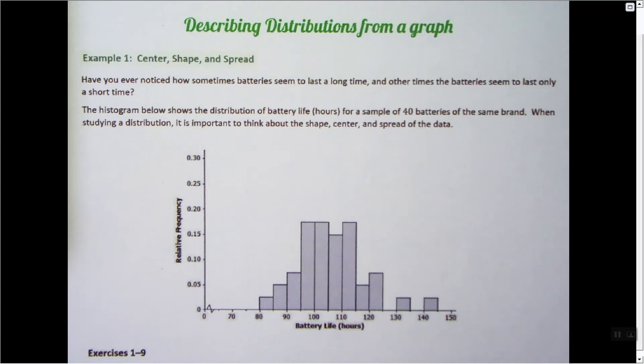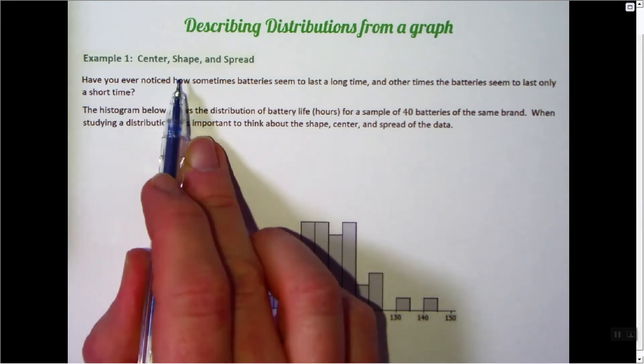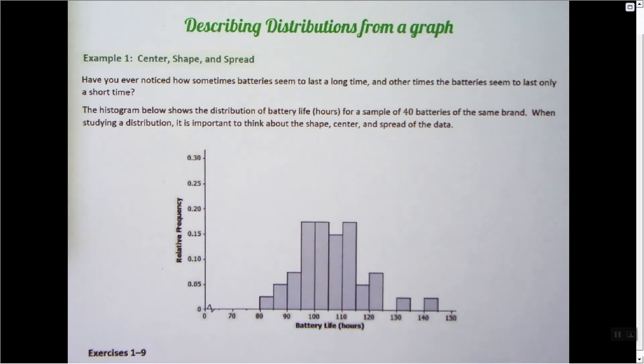This video is about describing distributions from a graph. We'll look at the center, shape, and spread of a distribution. Have you ever noticed how sometimes batteries seem to last a long time, and other times the batteries seem to last only a short time? The histogram below shows the distribution of battery life in hours for a sample of 40 batteries of the same brand. When studying a distribution, it is important to think about shape, center, and spread of the data.